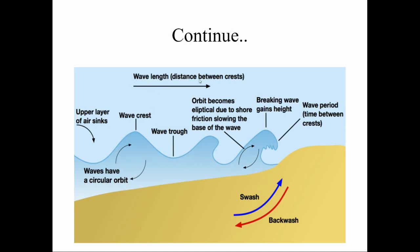This is the wavelength — how sea waves actually erode the material in the surrounding area. The upper layer of air sinks and the waves have a circular orbit. This is the wave crest and this is the wave trough. The orbit becomes elliptical due to shore friction slowing the base of the waves.